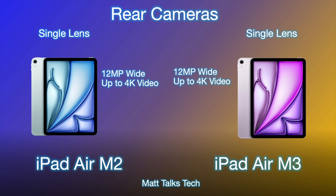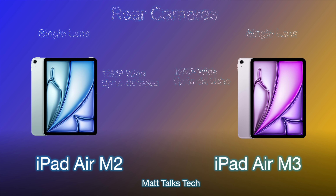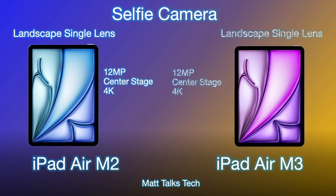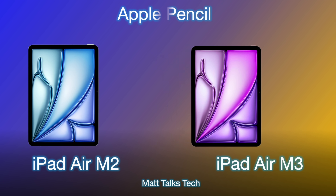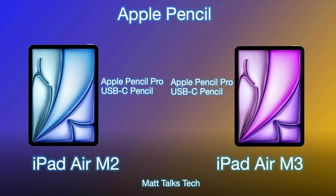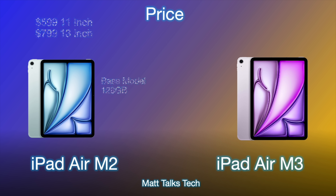For the rear cameras, it's exactly the same on all four models — 11 or 13 inch, M2 or M3 — a 12 megapixel wide camera that can record up to 4K video. With the M3 the chip may produce slightly sharper photos and video, but we'll have to test that in real-life scenarios. For the selfie camera, both have the same landscape single-lens Center Stage 12 megapixel camera recording up to 4K. For Apple Pencil, both support the Apple Pencil Pro and USB-C Apple Pencil.